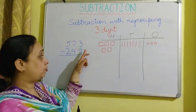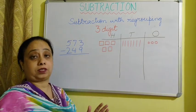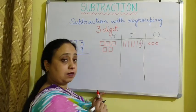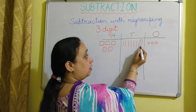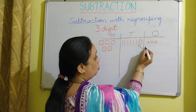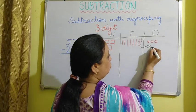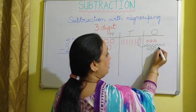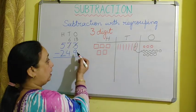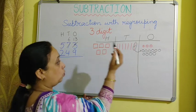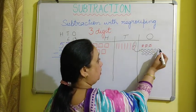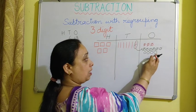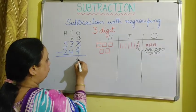We have 3 ones and we have to take away 9 ones — but this is not possible. So we borrow 1 ten from the tens column and convert it to 10 ones. Now instead of 3 ones, we have 13 ones. We take away 9 ones from 13 ones, and 4 ones remain. So we write 4.